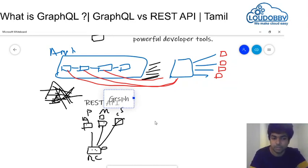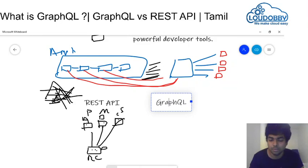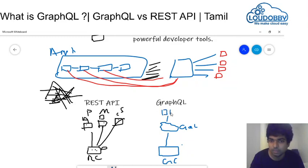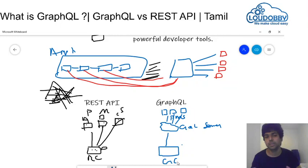GraphQL is a new technology and very effective. If you look at GraphQL, we can use it as the next approach. With applications A, B, and C — three applications covering player, match, and score — GraphQL handles the data. You can get a single response instead of multiple API calls.